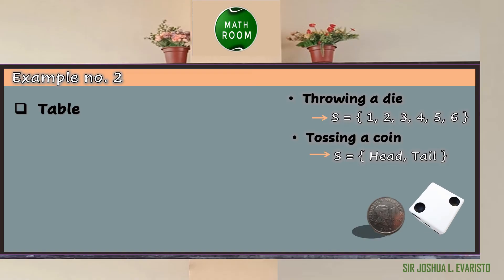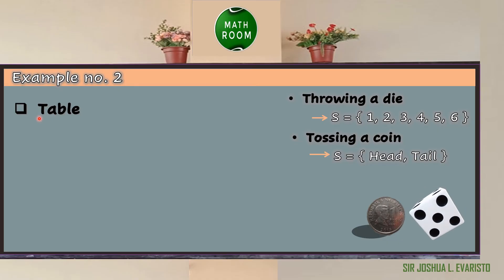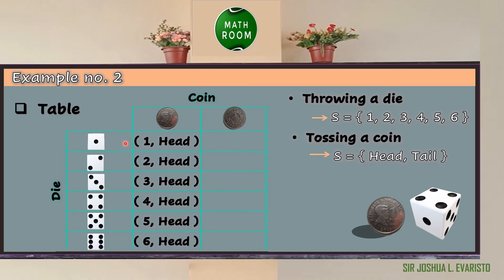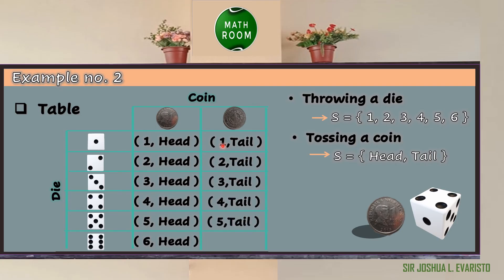Given the sample space of throwing a die and tossing a coin, let us show the possible outcomes using a table. The first row determines the possible outcomes of the die: 1, 2, 3, 4, 5, and 6. The first column determines the possible outcomes of the coin: head and tail. So the possible outcomes are 1 head, 2 head, 3 head, 4 head, 5 head, 6 head, 1 tail, 2 tail, 3 tail, 4 tail, 5 tail, and 6 tail.